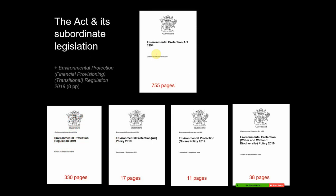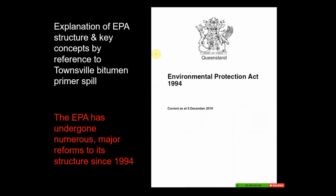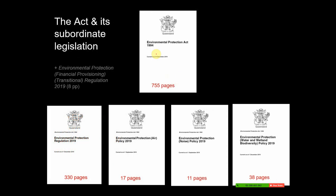Since then there's been a whole series of major reforms. In 2013 there were the 'green tape' reforms. Just recently we've had chain of responsibility laws, and just last year there were major reforms for mine rehabilitation. If we look at the act now, it's pretty enormous — 755 pages. There's also four pieces of subordinate legislation: the Environmental Protection Regulation 2019 at 330 pages, and three Environmental Protection Policies — one for air, one for noise, and one for water and wetland biodiversity.